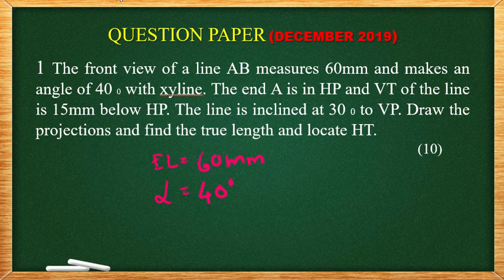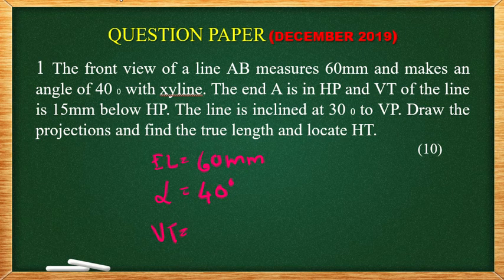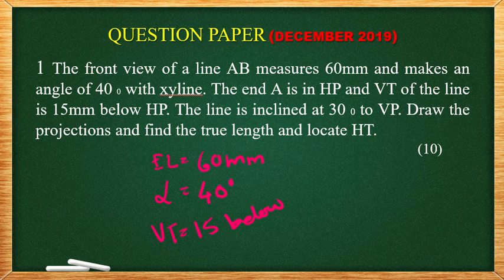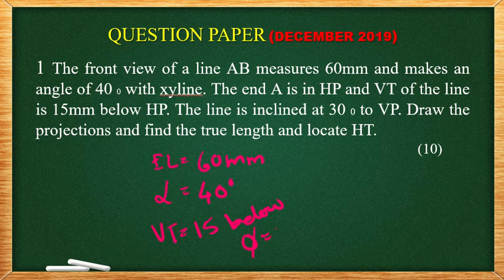That means, vertical trace, VT is 15 mm below HP. Then, the line is inclined at 30 degree to VP. That means, line is inclined 30 degree to VP, theta is equal to 30 degree. This is the data.